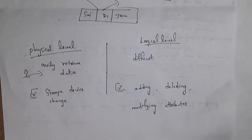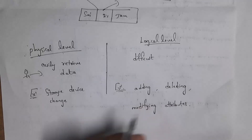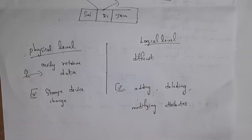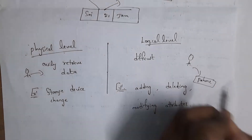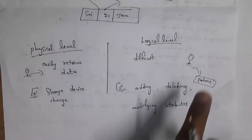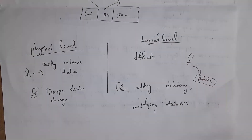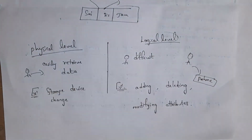For example, if you perform any changes in logical level like adding or deleting columns, then it will be difficult for users to retrieve data. For instance, if a database programmer removed the phone number column in the student table, the student would write an SQL query to check their phone number but would not get that information because the programmer removed that column. So if we change the structure at the logical level, retrieving data becomes very difficult.